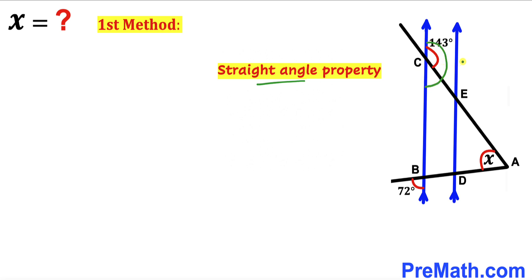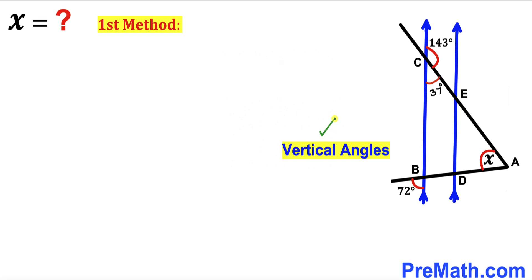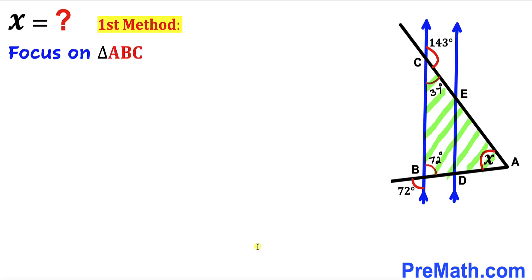This whole angle is going to be 180 degrees, and we know this angle is 143 degrees, so therefore this remaining angle is going to be 37 degrees. Now let's recall the vertical angles property and focus on this angle of 72 degrees — this vertical angle is going to be 72 degrees as well.